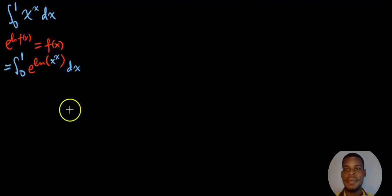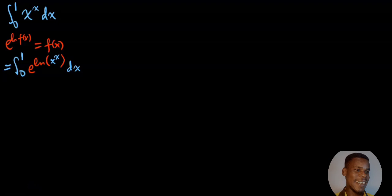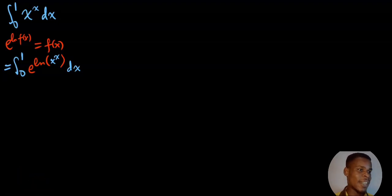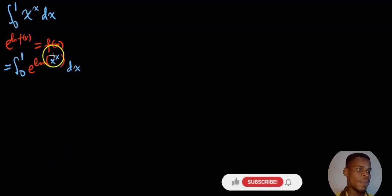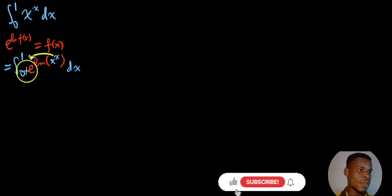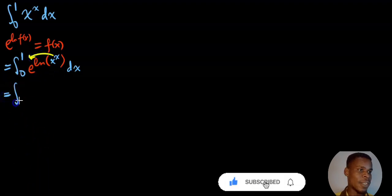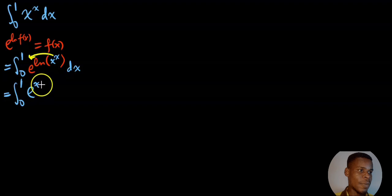Now this integral is sometimes called a Bernoulli integral — it's a very interesting one to evaluate, as you'll see. I'm going to use some logarithmic properties to bring the exponent down. That means we're going to have the integral from 0 to 1 of e raised to the power of x times the natural logarithm of x, then put the dx out here.